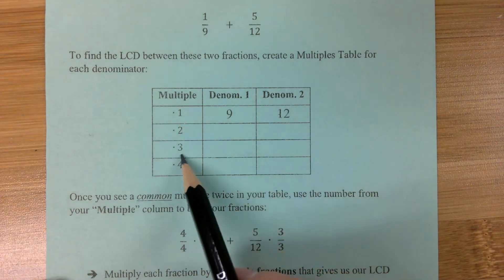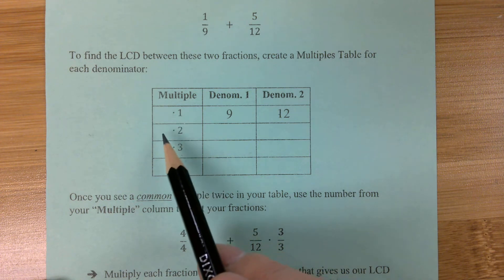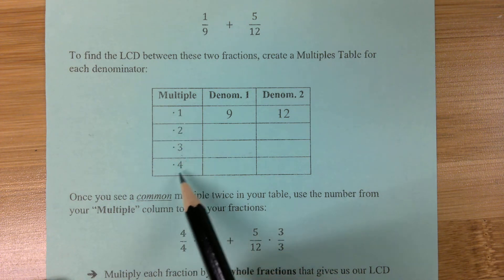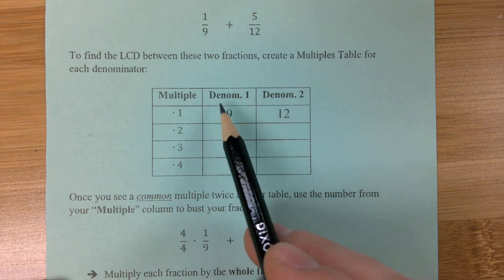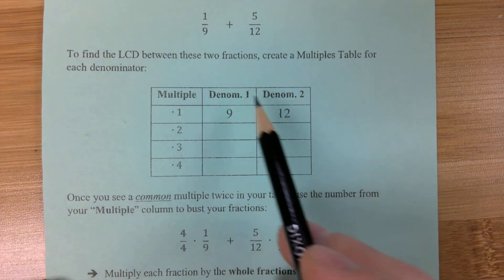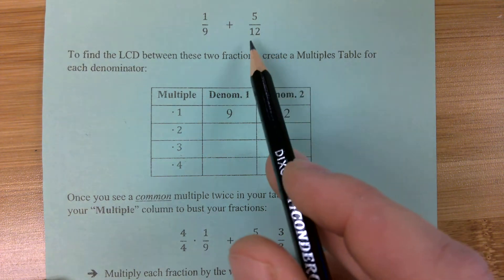This column here is our multiples. We're going to multiply by 1, multiply by 2, by 3, and by 4. This second column here is our first denominator of 9. And this third column is our second denominator, which is 12.